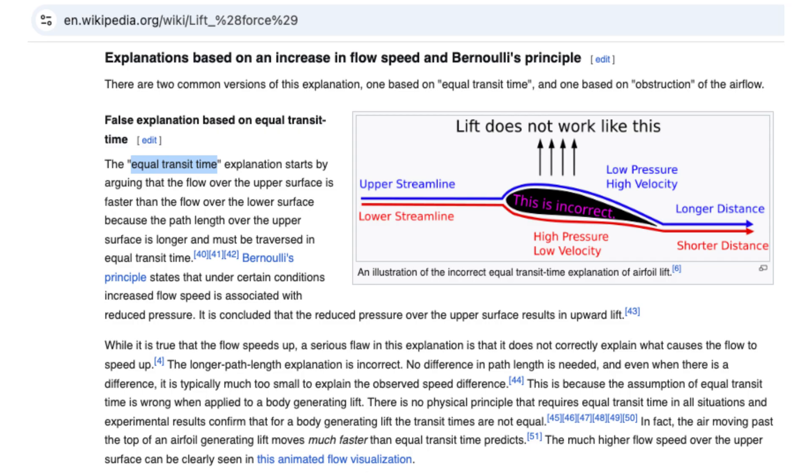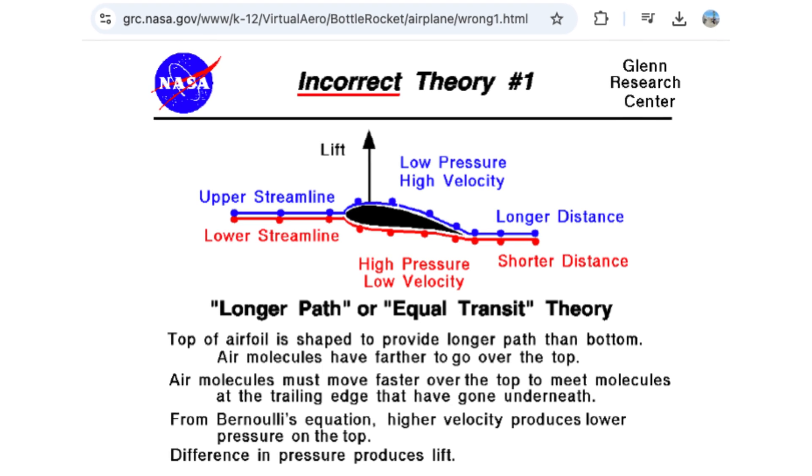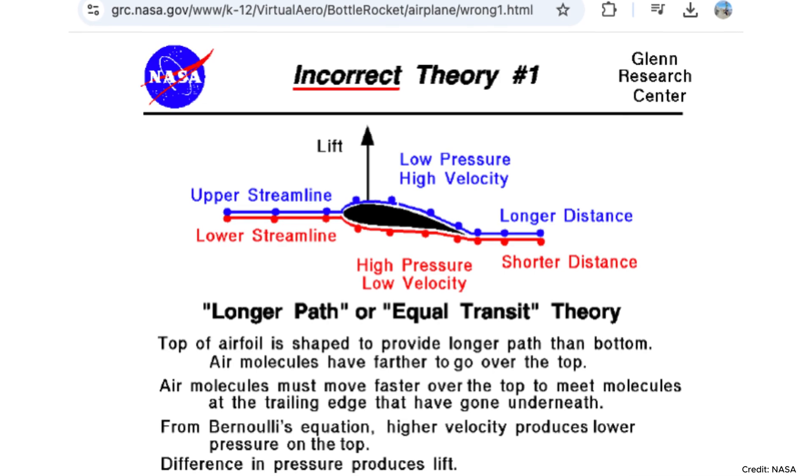One explanation emphasizes Bernoulli's principle and the equal transit time, noting that faster airflow over the curved upper surface of a wing reduces pressure, contributing to the lift.